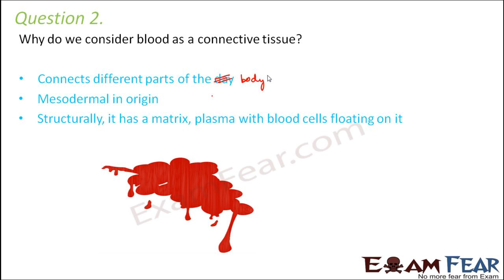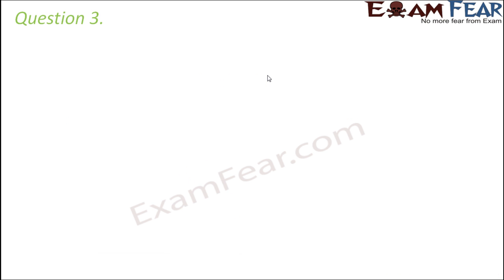Structurally, blood is also very similar to connective tissue. All connective tissues — bone, cartilage — have a matrix with cells floating in it. In bone, the cells are osteocytes suspended in a matrix; in cartilage, the cells are chondrocytes suspended in a matrix. Similarly, in blood, the matrix is called plasma, in which the blood cells — RBCs, WBCs, and platelets — are floating. So structurally, blood is very similar to connective tissue.